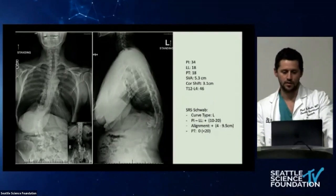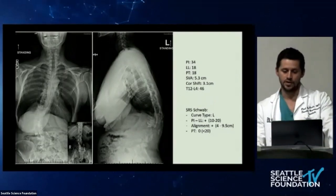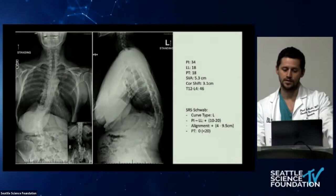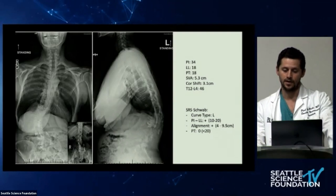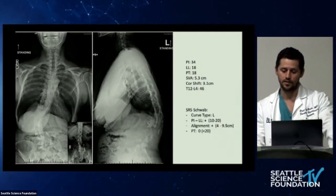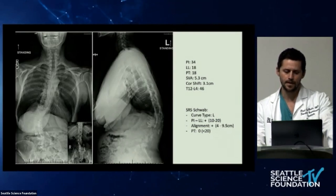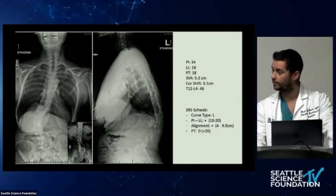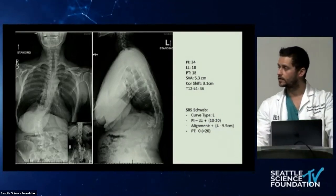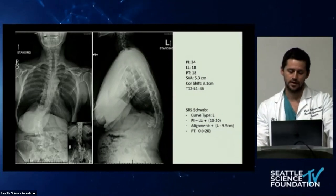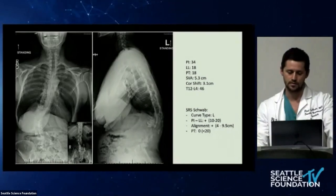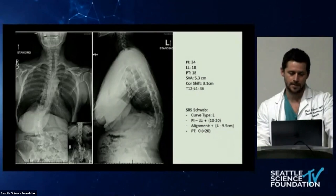Standing scoliosis films show a severe thoracolumbar kyphoscoliosis. PI 34, lumbar lordosis 18, placing the mismatch in the intermediate Schwab range. SVA 5.3 also in the intermediate range. Pelvic tilt just under 20. For comparison, x-rays from 2006 — 14 years earlier — show a thoracolumbar curve that is much less severe. Degenerative factors were a primary driving force of this curve progression. She also has loss of thoracic kyphosis.